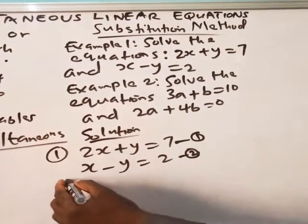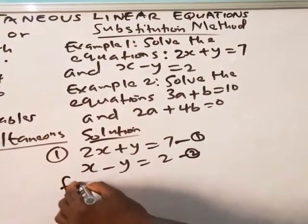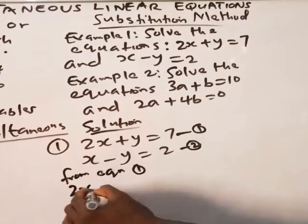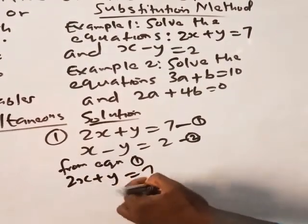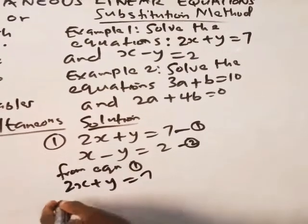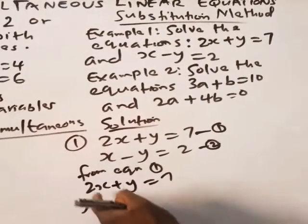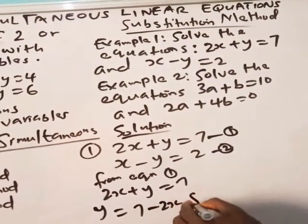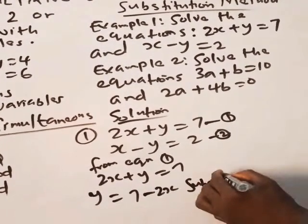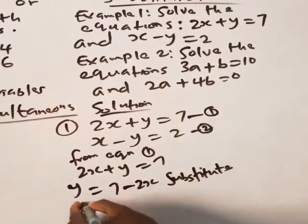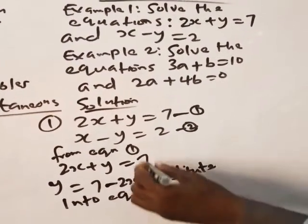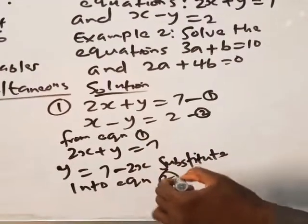I can start from 1 or 2. So you tell us what you are doing. From equation 1, 2x plus y is 7. I want to make y as the subject of the formula. So y is 7. Bring 2x here. You have minus 2x. So I will substitute into equation 2.